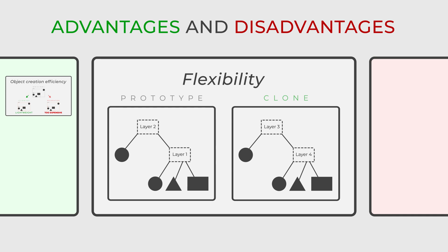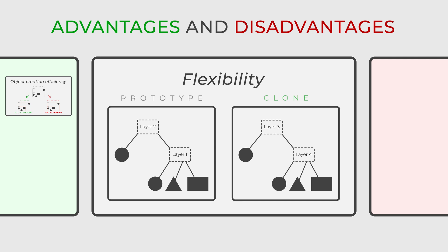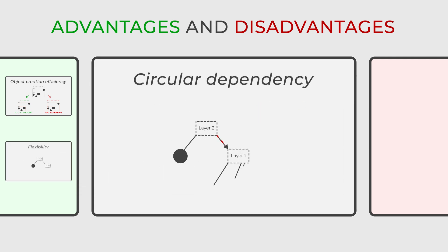Despite its advantages, the prototype pattern has its challenges. One of the main disadvantages lies in the potential for circular dependency issues. Implementing the prototype pattern can become complex and tricky if the object that needs to be cloned has a circular dependency. This situation requires careful handling to ensure that the pattern is implemented effectively without introducing bugs or inconsistencies in the application's behavior.